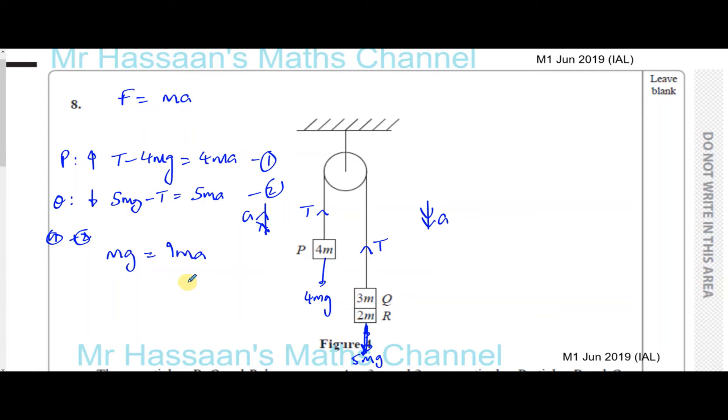So we can see that A is equal to 1 over 9 times G. So acceleration is 1 over 9 G meters per second squared. That's the acceleration of particle P - it's the acceleration of everything. So we can say the acceleration of particle P is 1 over 9 G meters per second squared.